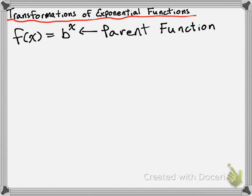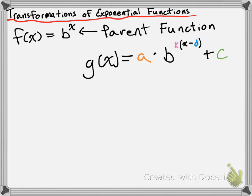The following is going to be a description of all the transformations of that parent function. So it's going to be g of x is equal to a times b to the power of k times x minus d, plus c.